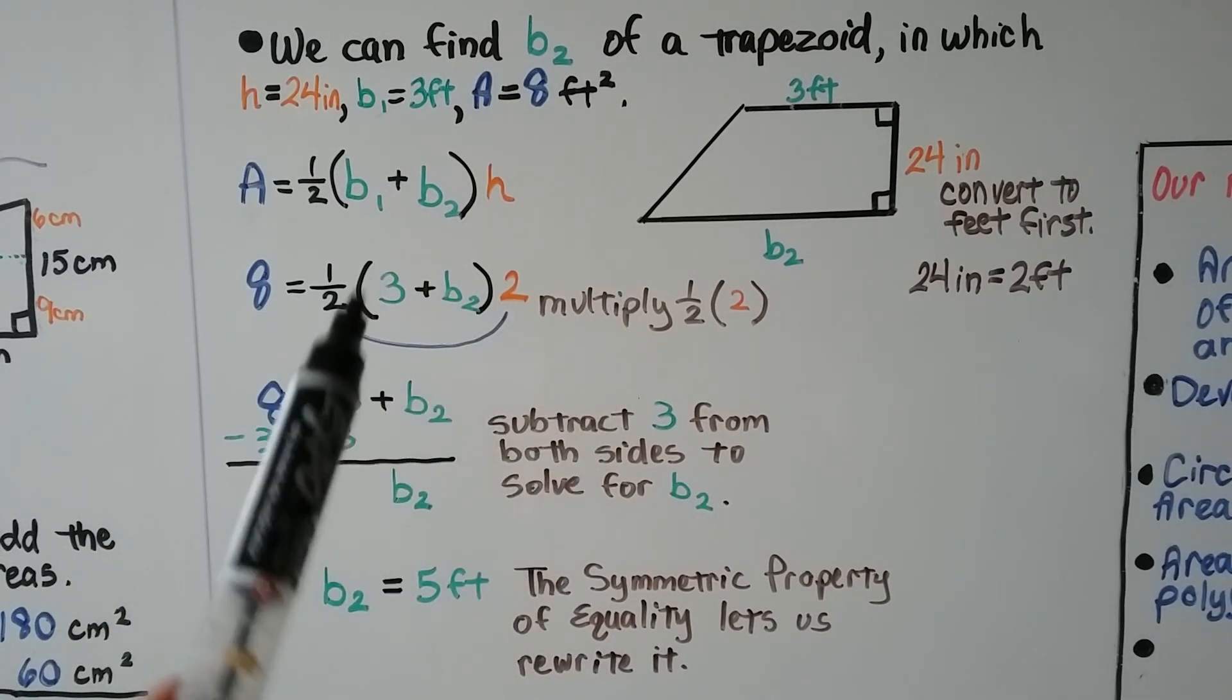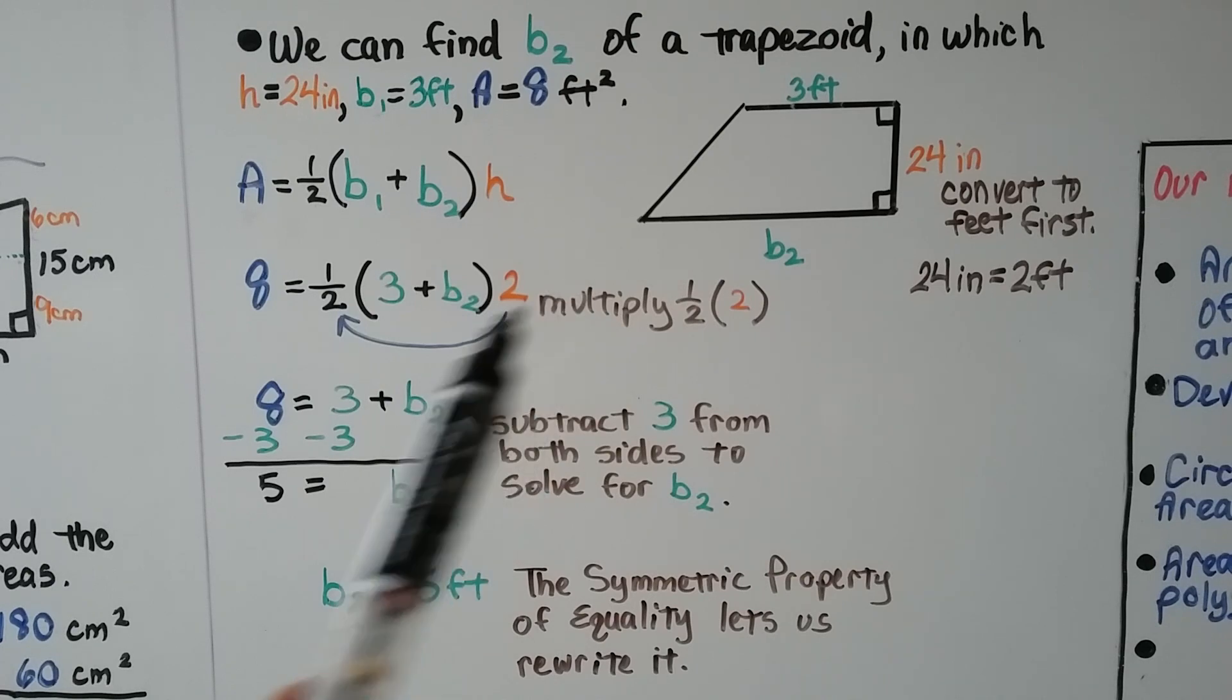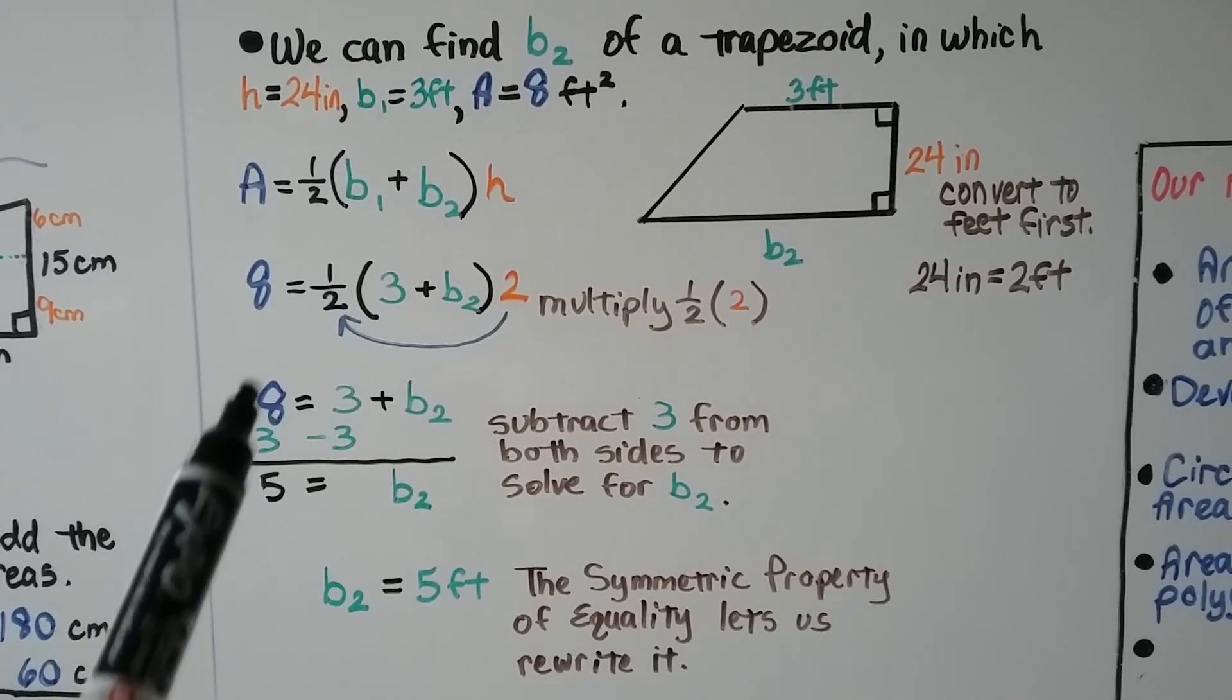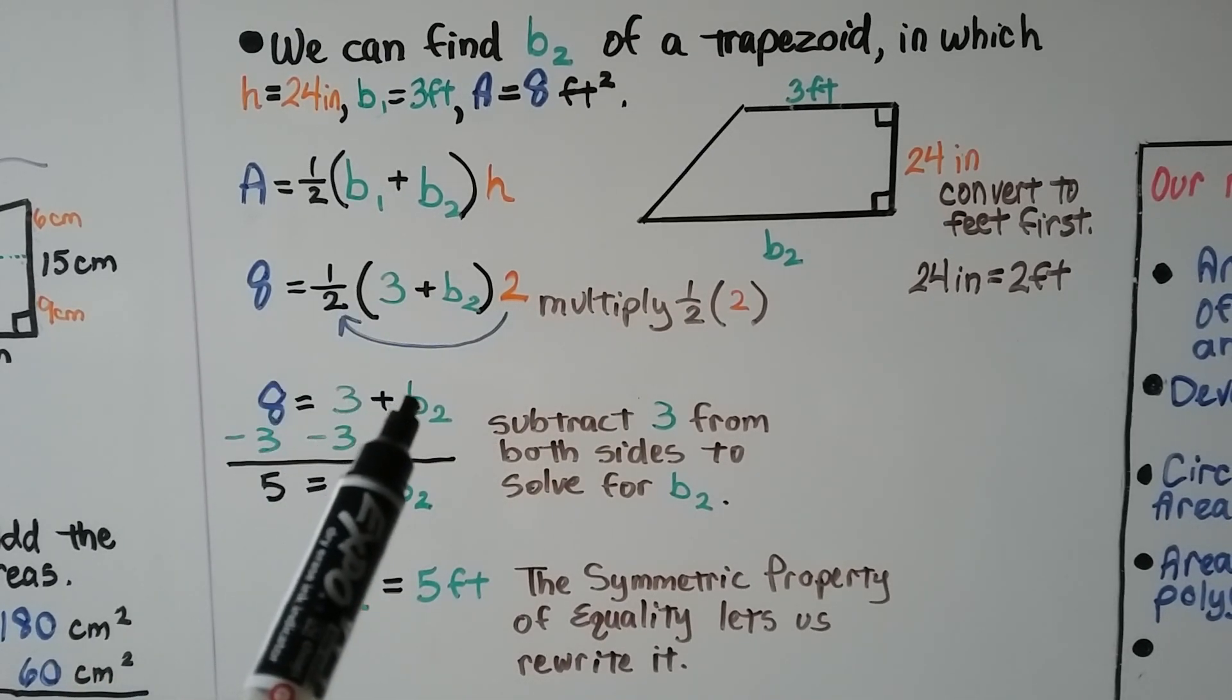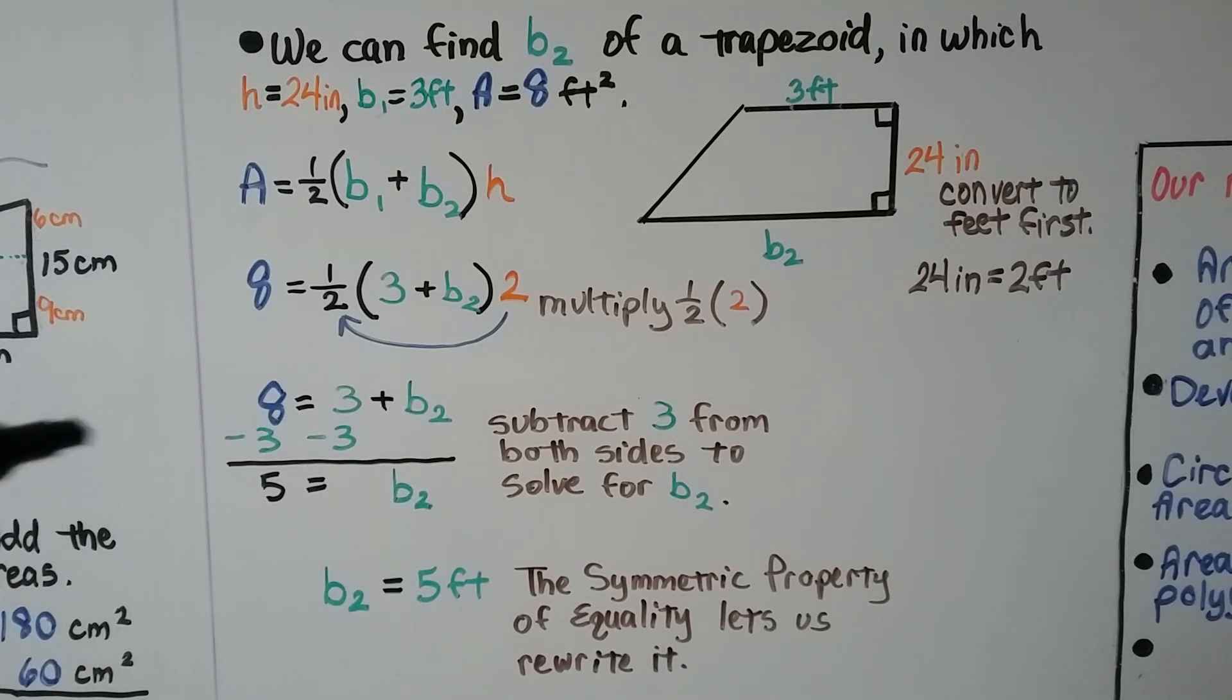We multiply the half times the 2 and we just get a 1. So identity property, we have 3 plus b sub 2 for the right side. We can subtract 3 from both sides of the equal sign and get 5 is equal to base sub 2. So now, using the symmetric property of equality, we rewrite it as base sub 2 is equal to 5 feet.